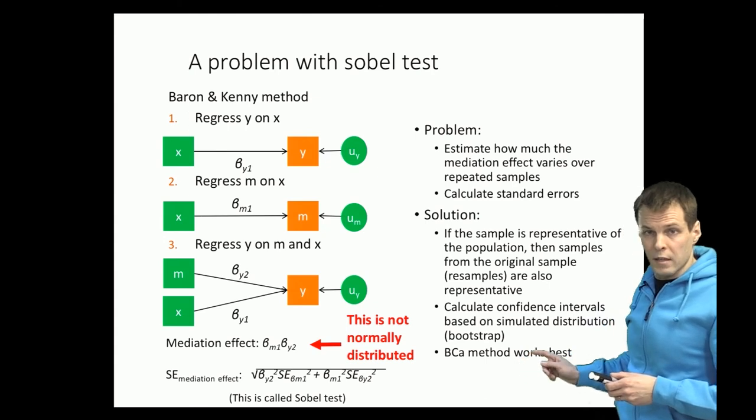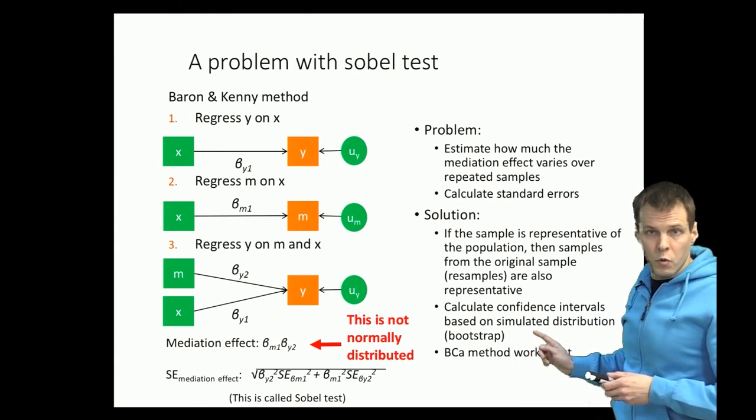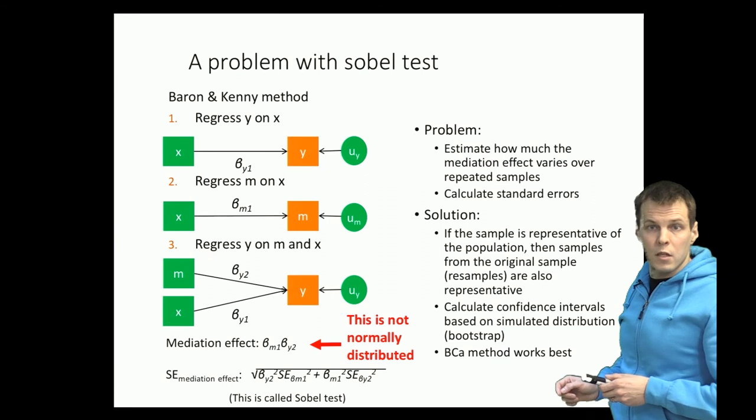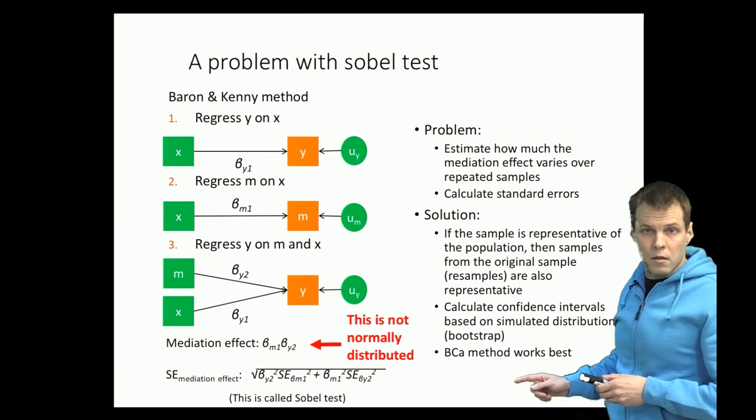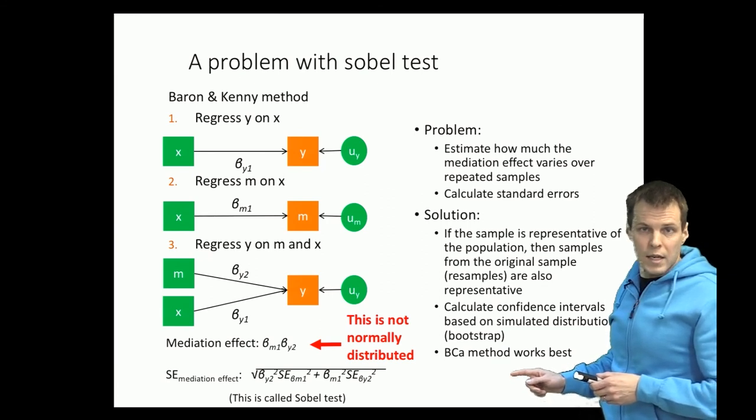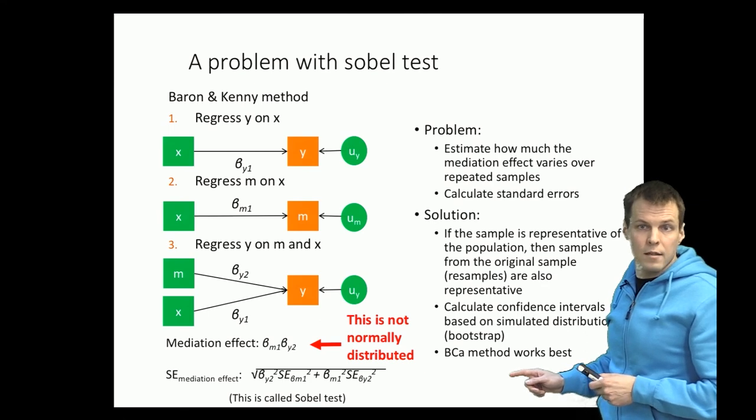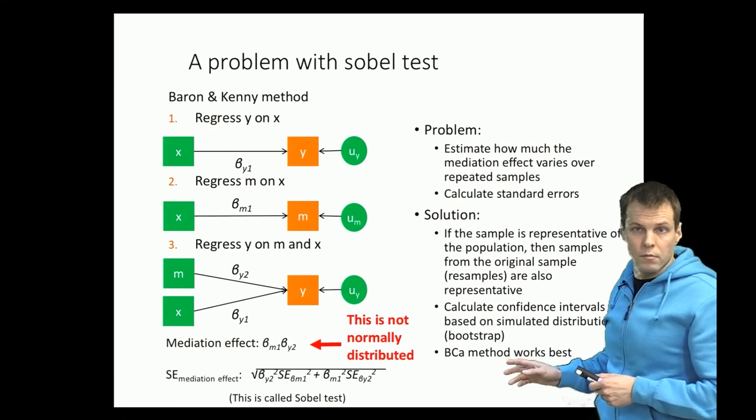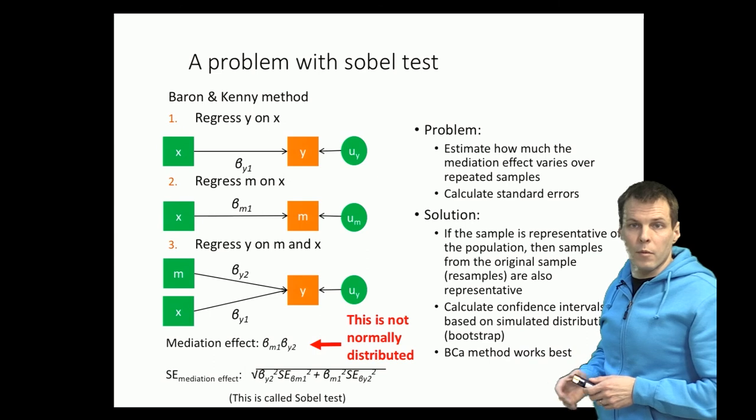There are different ways of doing that and the bias corrected and accelerated or BCA method has been shown to work best for this particular scenario. I will talk more about bootstrapping in a separate video.